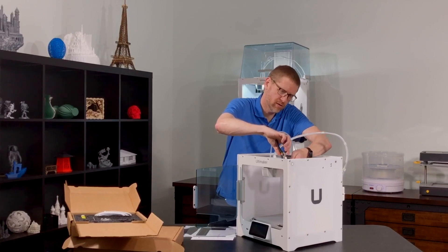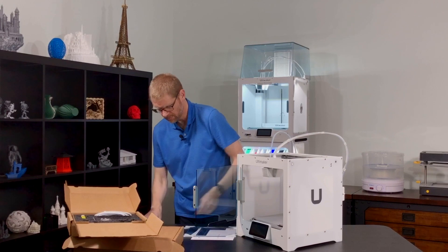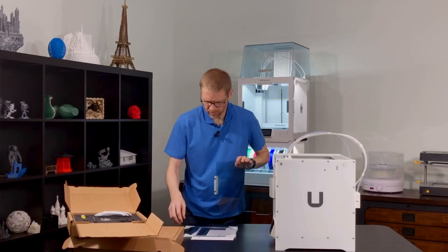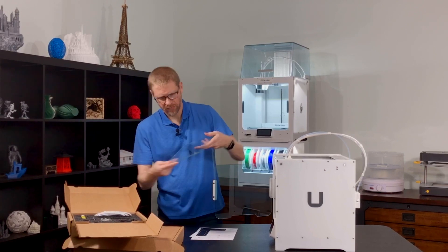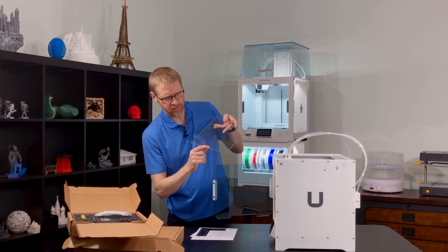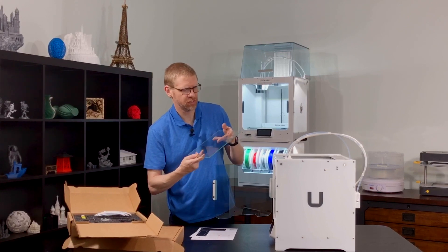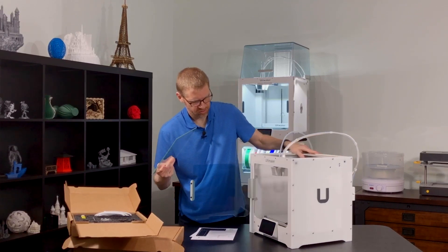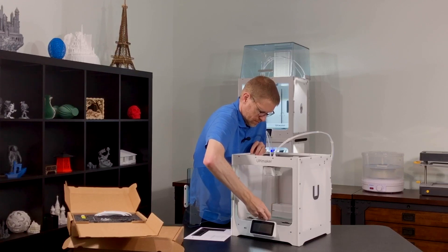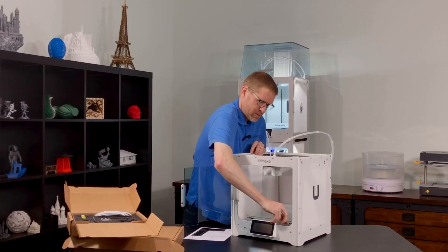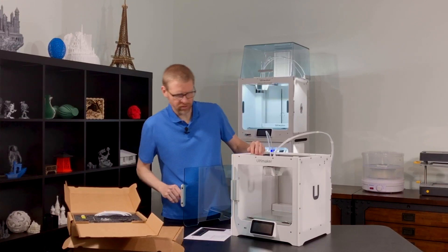We will snip the one zip tie that's in here and install our glass build plate. There is a little sticker on the front of the glass build plate, a little temperature warning sticker. You want to make sure that is on the top side facing front. The glass plate just slides in. It goes into the back clips and then the front clips close on the front. Glass plate is in.